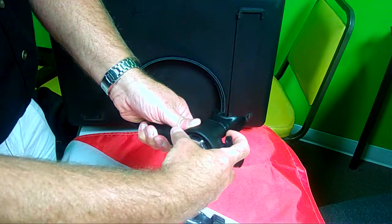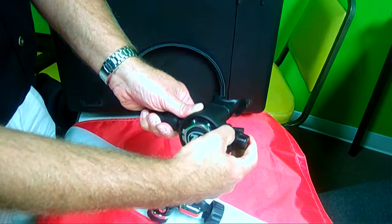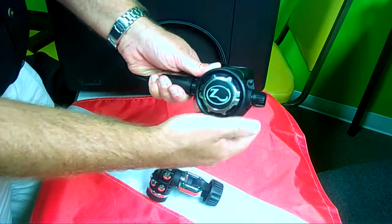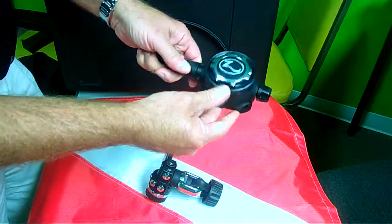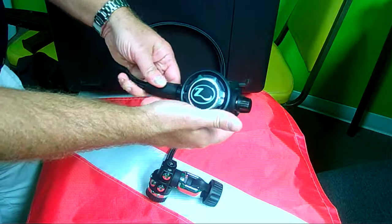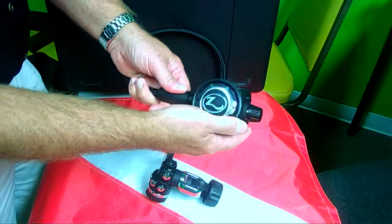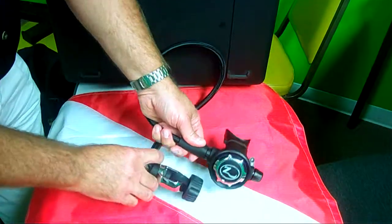And then it does have a venturi effect on here as well to adjust the ease of breathing by adjusting the airflow coming into the second stage. Again, this is a balanced second stage as well, the Zeagle Flathead 7 regulator.